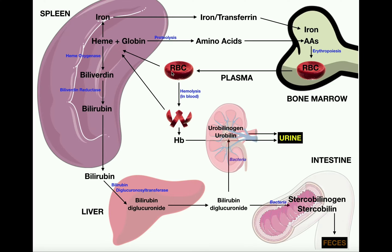The red blood cell will be taken up by the spleen and it will be separated into three components: the globin, the heme, and the iron. Remember that iron is technically part of the heme, but it can be removed.